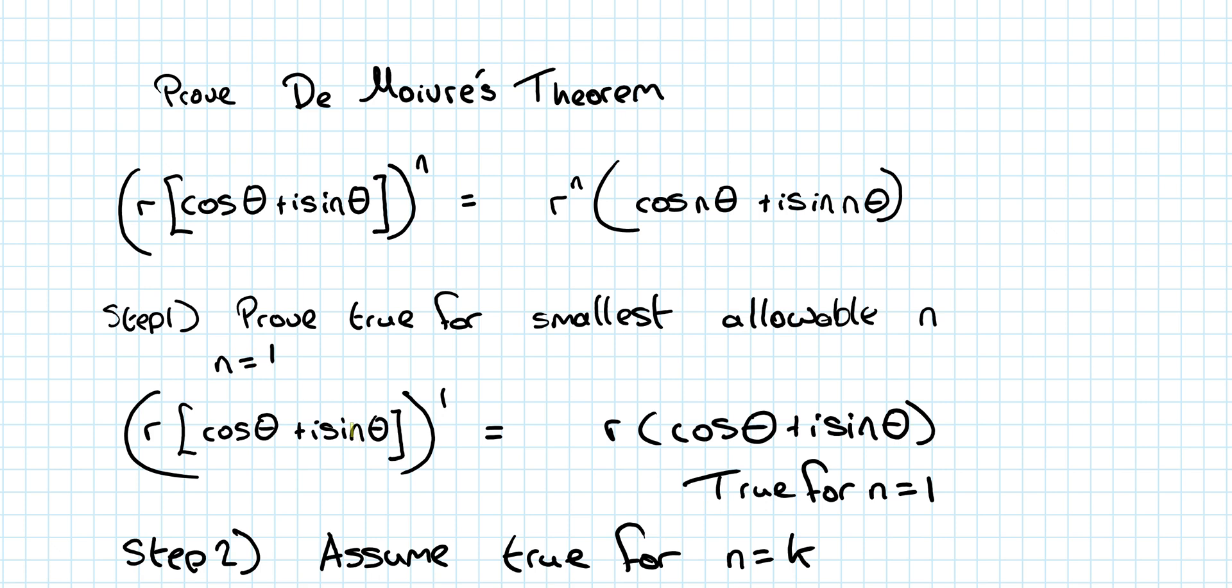So we're putting it to the power of 1, but anything to the power of 1 is itself. And we know left is equal to right here, so it's true for n is equal to 1. Step 2. And it's really important again that you do actually write that down. Step 2. Assume true for n is equal to k. That's possibly one of the funniest steps in all of maths that we are assuming. It seems really weird, but it's what we do.